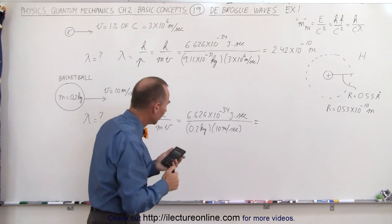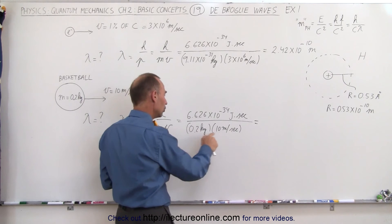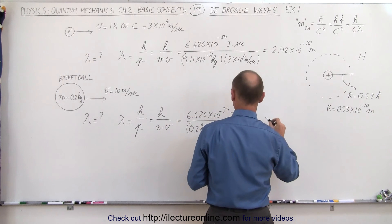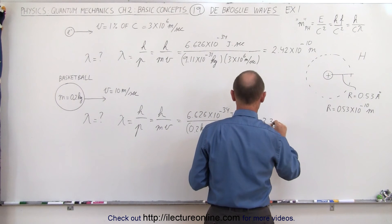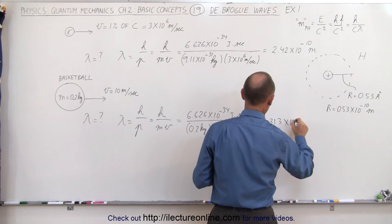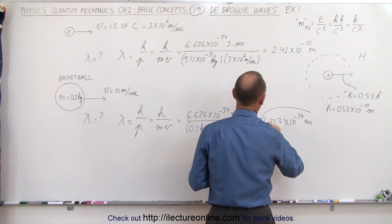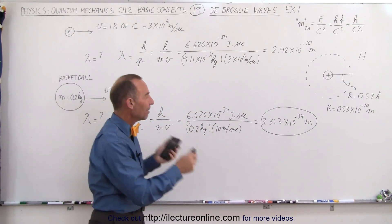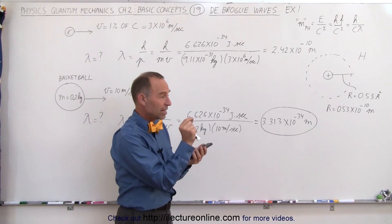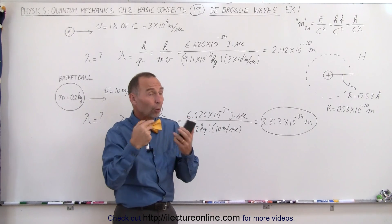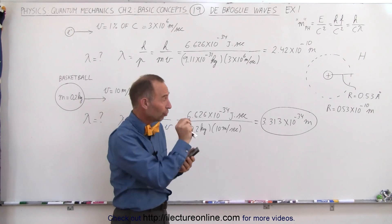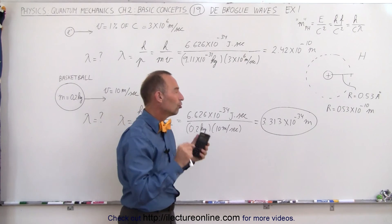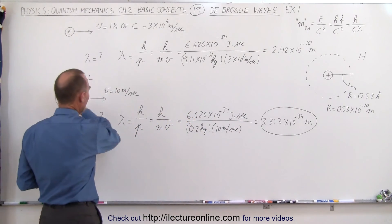Let's see what that gives us. 0.2 times 10 is 2, so we don't even need a calculator — this equals 3.313×10⁻³⁴ meters. Notice the size of that wavelength: there is no way we could ever measure something that small. The diameter of a nucleus is on the order of 1×10⁻¹⁵ meters for a small nucleus, and this wavelength is far smaller than that. There's no way anyone could ever measure the wavelength of a moving basketball.